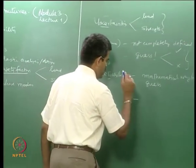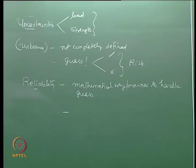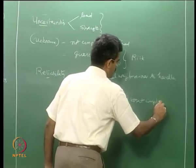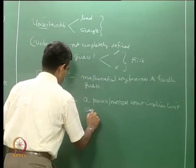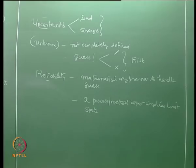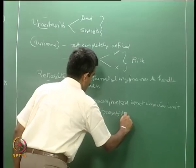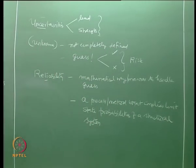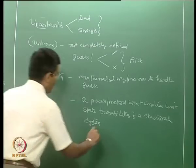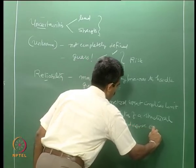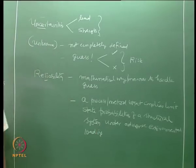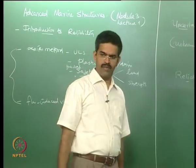Conventionally, reliability is defined as a process or method that implies limit state probabilities of a structural system under adverse environmental loading. There are three key words here which one has to understand before we discuss reliability in detail in this unit.